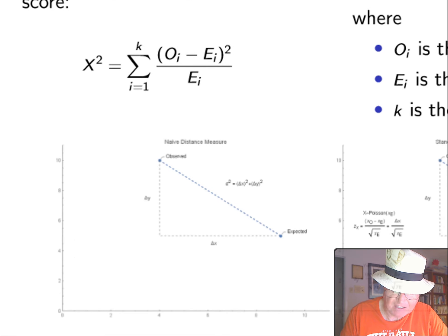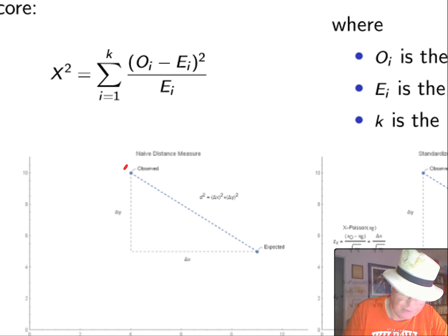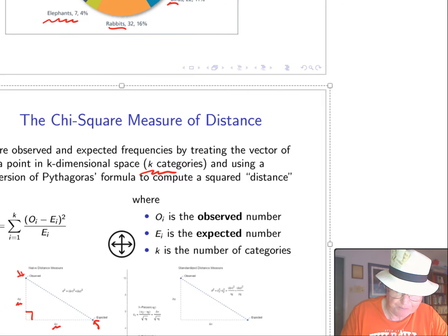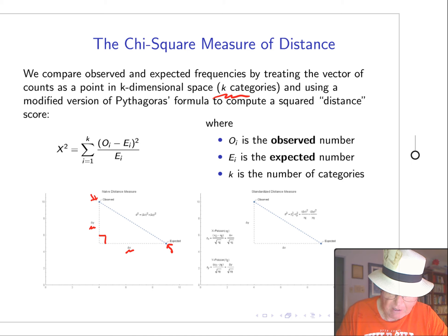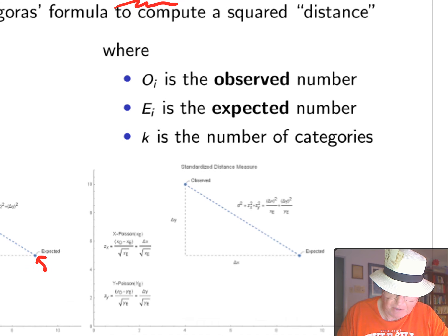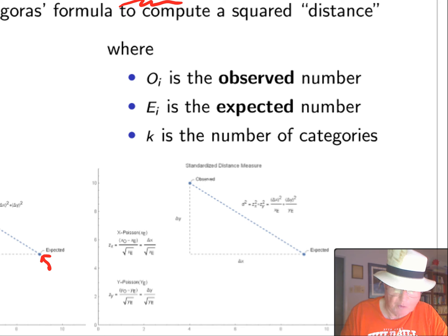I'm sure we've all seen this in high school where we have two points, observed and expected. If we're in Cartesian coordinates, simply take the square of the x distance, the square of the y distance, add them together, and we get the square of the overall distance. This would be good if counts were being measured in comparable units. However, counts are not comparable units if they have different sizes. So we have to rescale them to put them on the same measurement scale. It turns out we can rescale them by dividing by the expected value in each direction.